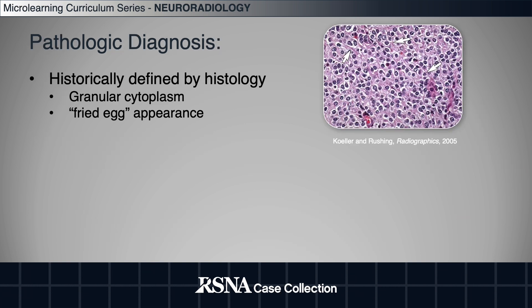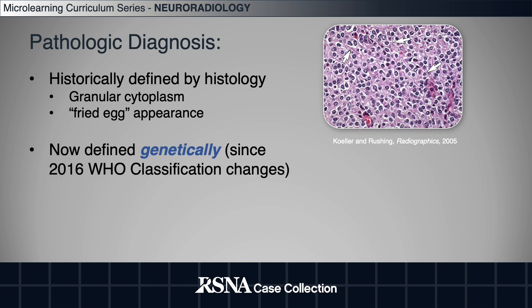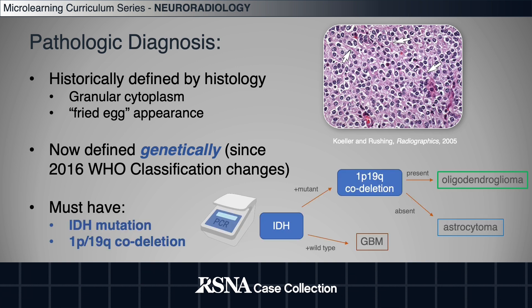Historically, these tumors were diagnosed based on histology, including a granular cytoplasm and so-called fried egg appearance. But since the 2016 WHO classification update, they're now defined genetically, as the genotype more closely predicts tumor behavior and clinical outcomes. The diagnosis is predicated on IDH mutation status. An IDH wild-type tumor is a glioblastoma, and it must also have a chromosome 1p19q codeletion to be an oligo — without the codeletion, it's an astrocytoma.